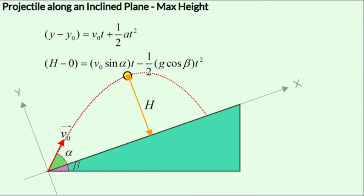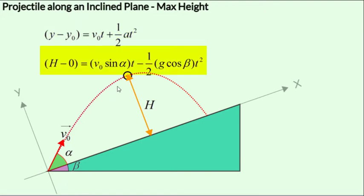Applying the second equation of motion along the y-axis: Y minus y₀ equals V₀t plus half at squared, from the launch point to the maximum height position. The initial y displacement is 0 and the final y displacement is H, which we want to compute.